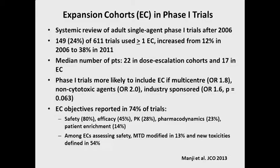Phase one trials more likely to have expansion cohorts tend to be multicentric, use non-cytotoxic agents — which is increasingly common with targeted agents or immunotherapeutics — and be company-sponsored or driven. Our exercise was to understand whether the objective of expansion cohorts is well stated in published papers. In most cases they are stated, but not well stated, and in many cases they're not stated at all.